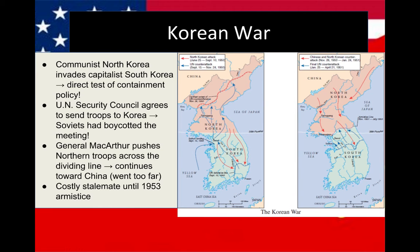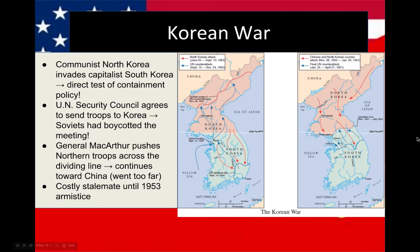MacArthur called for expanding the war by bombing and invading China. But the Chinese didn't want that to happen, so they amassed about 100,000 soldiers on their side of the border and launched a counterattack. The Chinese and North Koreans then pushed back into South Korea, resulting in a very costly stalemate. Not much movement of the front took place over the next couple of years. Truman was upset that MacArthur went against his orders — Truman only wanted to enforce the policy of containment, while MacArthur wanted to push communism further inward. So Truman fired MacArthur for insubordination. By 1951 they started armistice talks, which dragged on for two years, and by 1953 they established an armistice.